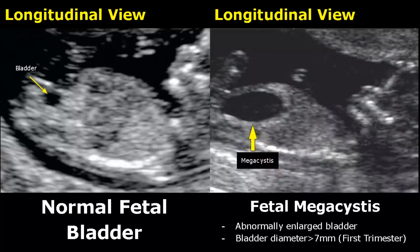Fetal megacystis is the term given for an abnormally enlarged bladder in the first trimester. The diameter will exceed seven millimeters.